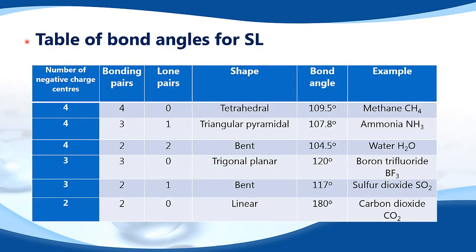This table shows all the bond angles for standard level chemistry. It lists the number of negative charge centers, the number of bonding pairs, the number of lone pairs, the shape, the bond angle, and an example molecule for each case.